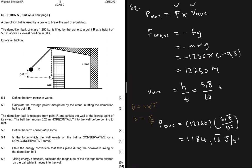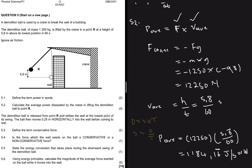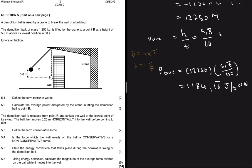Let's move ahead, that was 5.2. Let's move to 5.3. There's some more information given that the demolition ball is released from point R and strikes the wall at the lowest point of its swing. The ball then moves 0.25 meters horizontally into the wall before coming to rest.